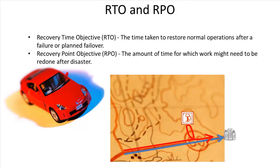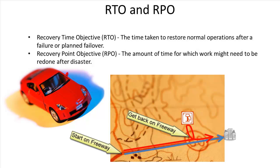The Recovery Time Objective, or RTO, is the time taken to restore normal operations after a failure or even a planned failover. Recovery Point Objective, or RPO, is the amount of time for which work might need to be redone after a disaster. In the freeway example, there was an RPO because getting back on the freeway required redoing some of the journey already completed before the disruption.